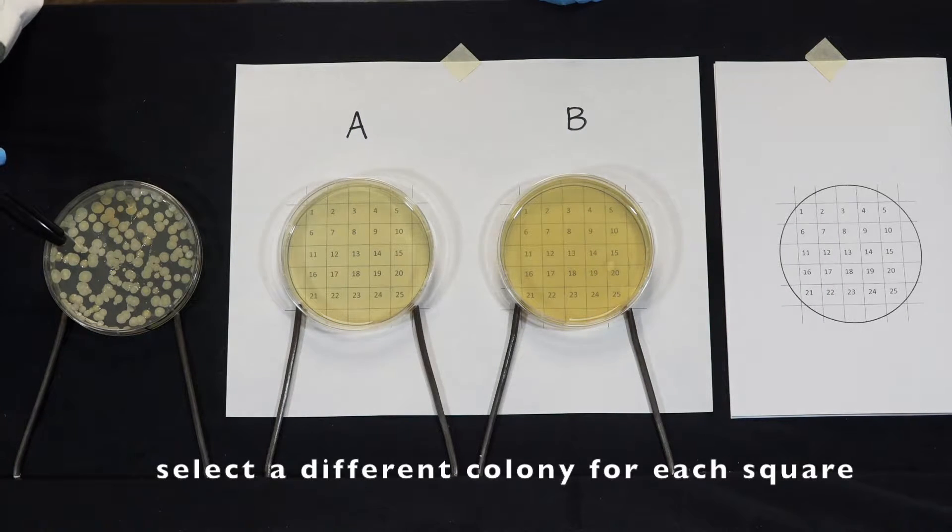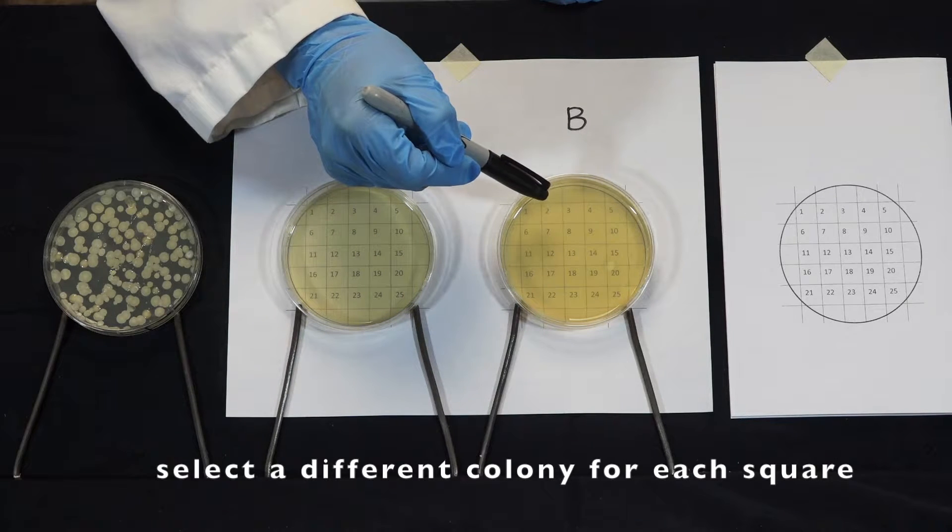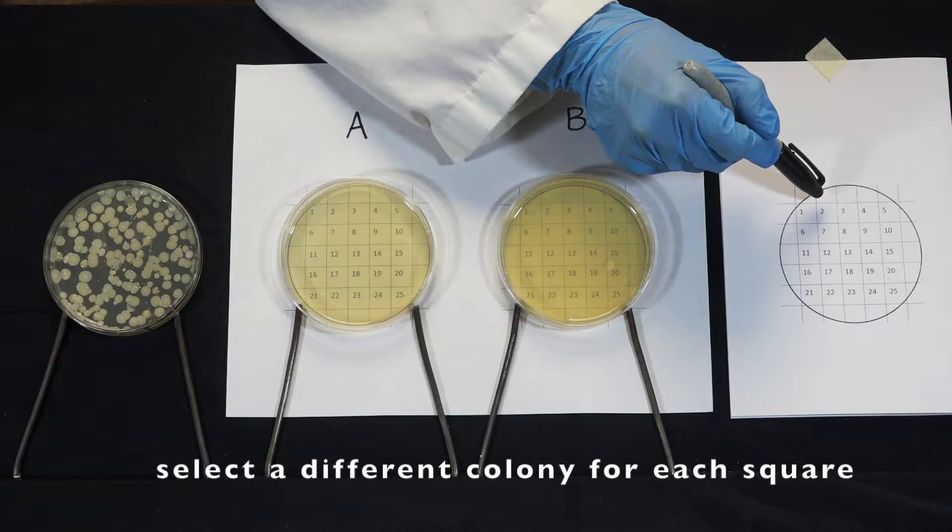We'll pick a second colony from this plate and inoculate square two on plate A and square two on plate B. And then mark off that we've inoculated square two.